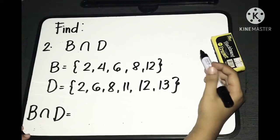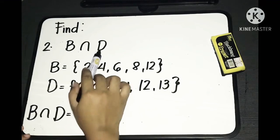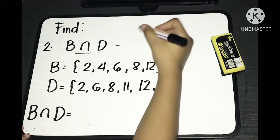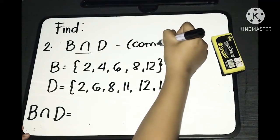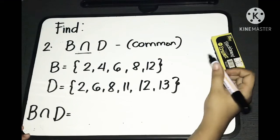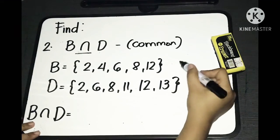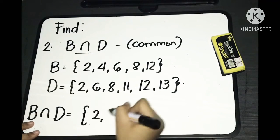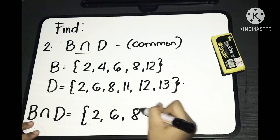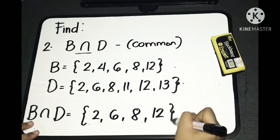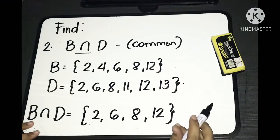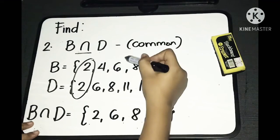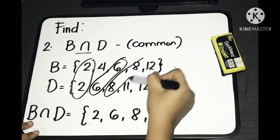For the second example, we are to find B intersection D. Our operation is intersection. For intersection, we are to find what are the common elements on the given sets. To find B intersection D, the common elements are 2, 6, 8, and 12. That is where they intersect.